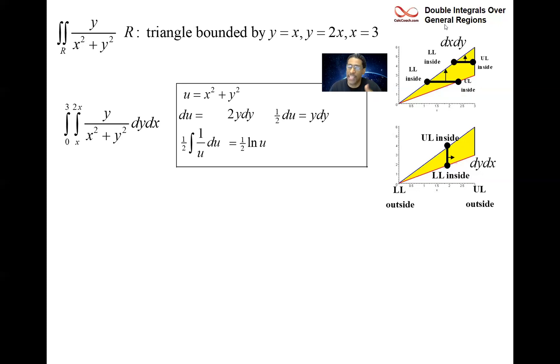That might be problematic thinking that you have to integrate that the next time, but let's see what happens. We have one half the natural log of x squared plus y squared as our antiderivative with respect to y. Our job is to replace y with 2x and replace y with x. y equals 2x gives you 4x squared plus x squared, so that's natural log of 5x squared. y equals x will be x squared plus x squared, so it'll be natural log of 2x squared.